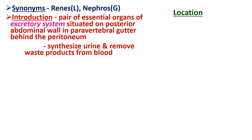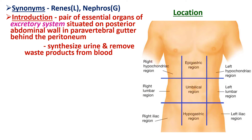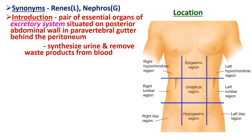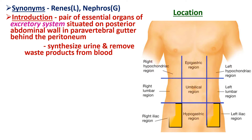Coming to the location of the kidney, for the location of abdominal organs, we divide the abdomen into nine quadrants with the help of two vertical and two horizontal planes. The area where the umbilicus is situated is called the umbilical region. Above it is the epigastric region, below it is the hypogastric region. On either side of the epigastric region we get the hypochondriac region, on either side of the umbilical region lie the lumbar regions, and on either side of the hypogastric region we get the iliac regions.